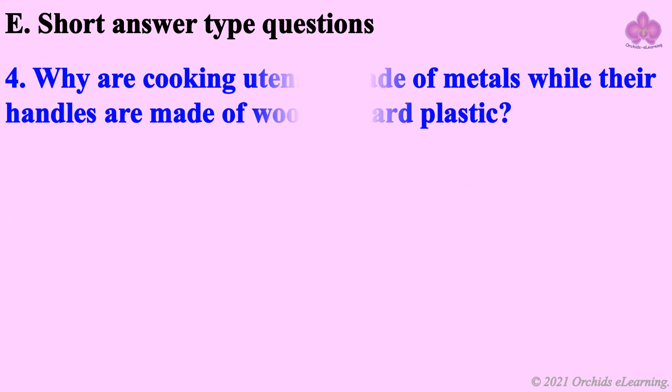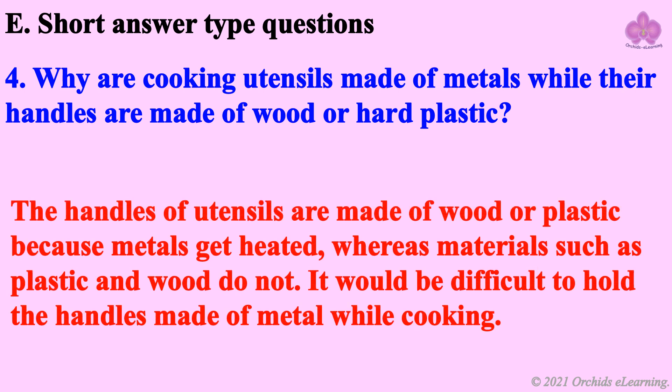Why are cooking utensils made of metals while their handles are made of wood or hard plastic? The handles of utensils are made of wood or plastic because metals get heated, whereas materials such as plastic and wood do not. It would be difficult to hold the handles made of metal while cooking.